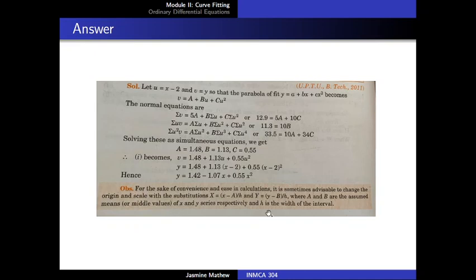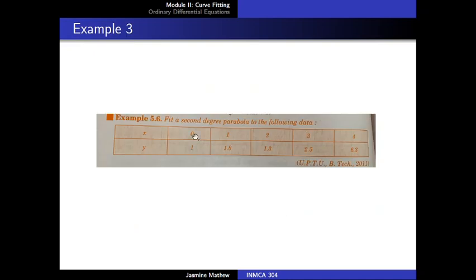First, let us look at the observation given below the problem. For convenience and ease in calculations, it is sometimes advisable to change the origin and scale with the substitutions: capital X equal to small x minus a divided by h, and capital Y equal to small y minus b divided by h, where a and b are assumed means or middle values of the x and y series respectively, and h is the width of the interval. Looking at the example, we can see that x values are given at a distance of one unit, so there is no requirement of unit conversion. But the origin is shifted to the middle point, and for that we have taken capital A equal to 2.